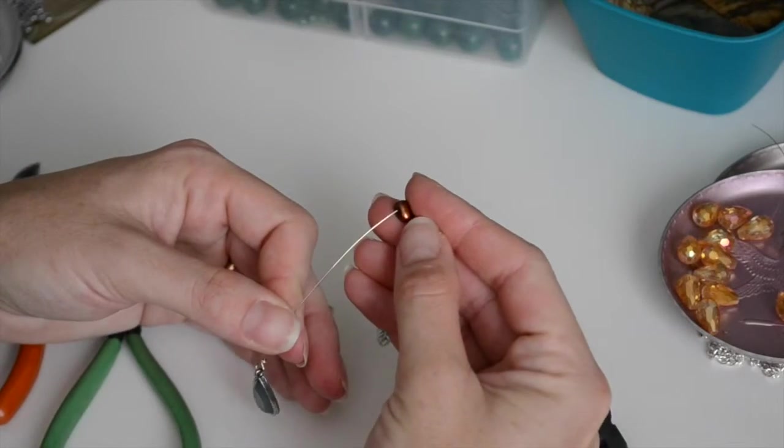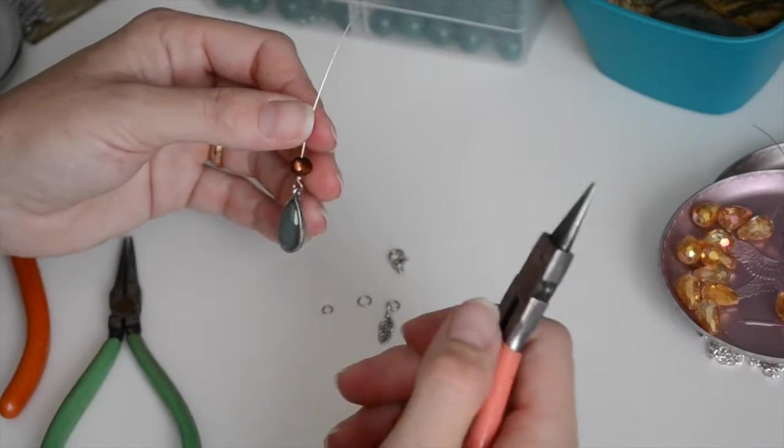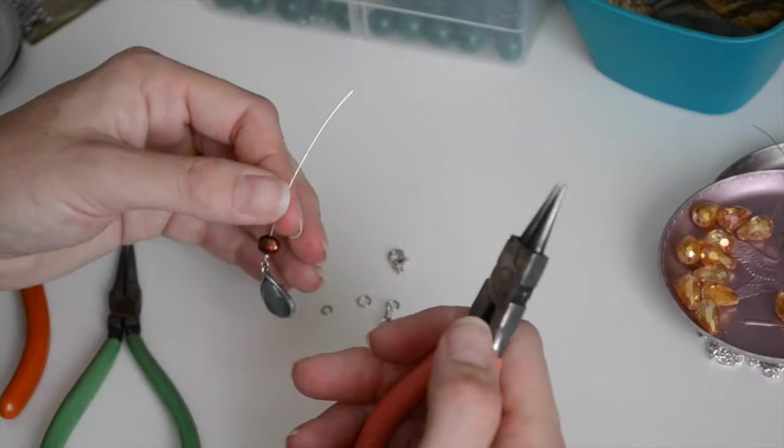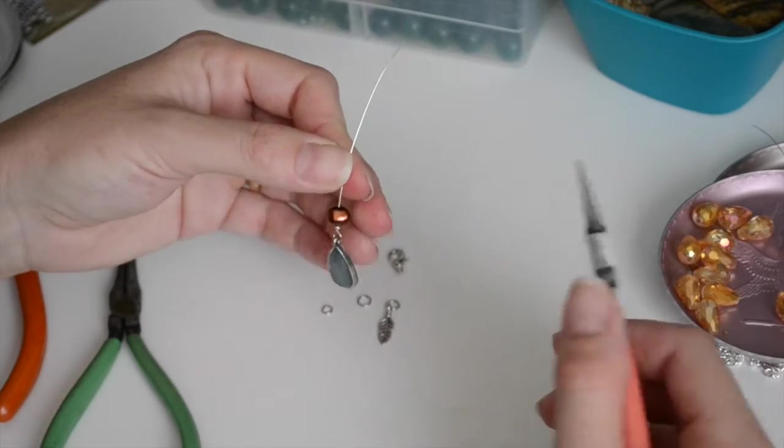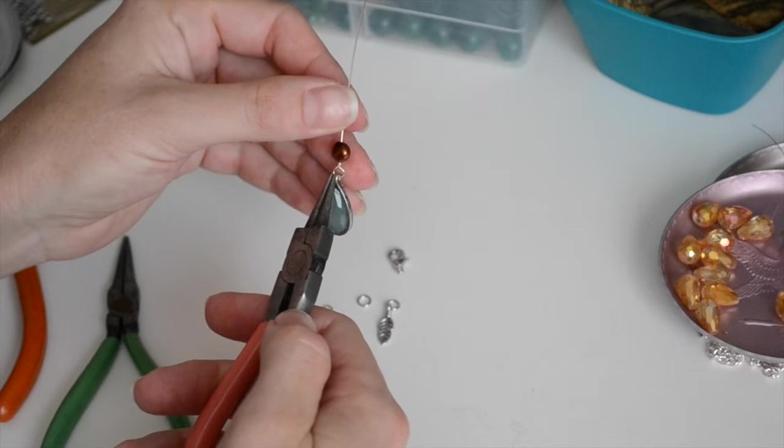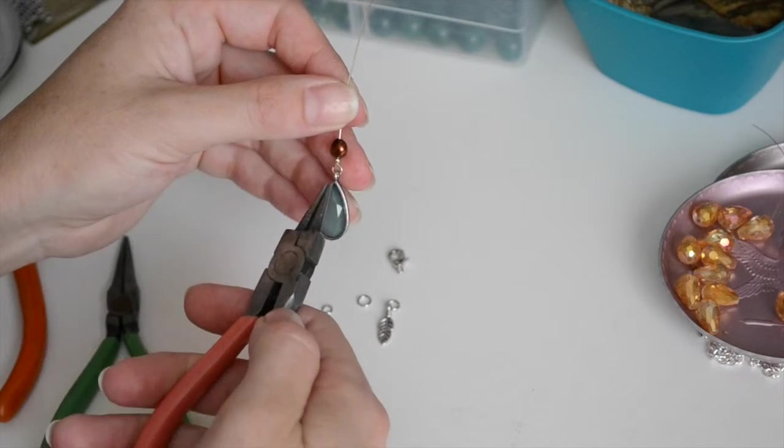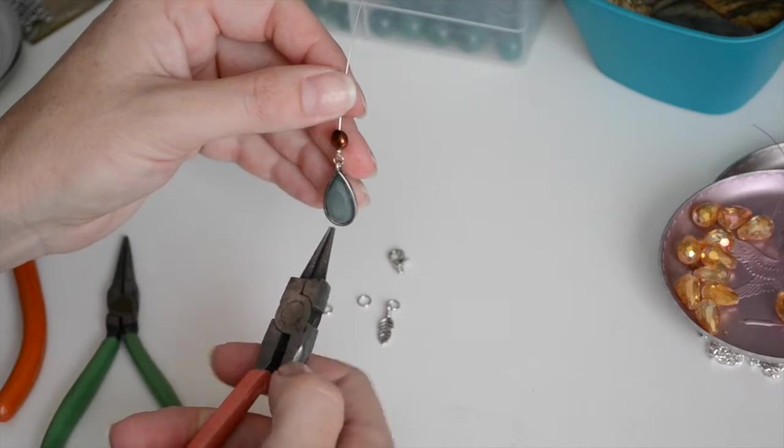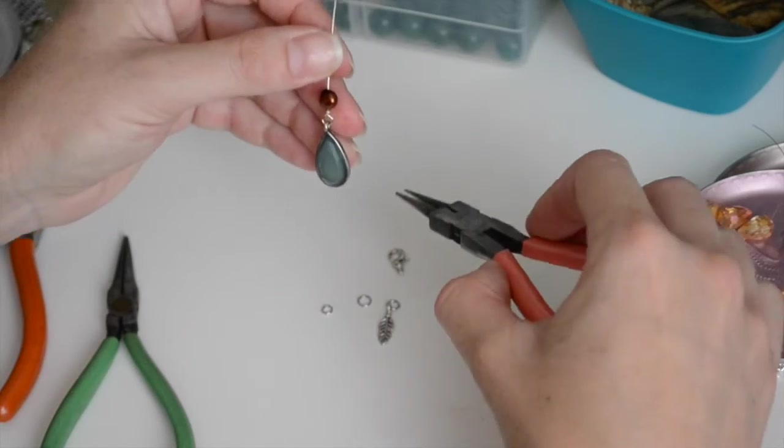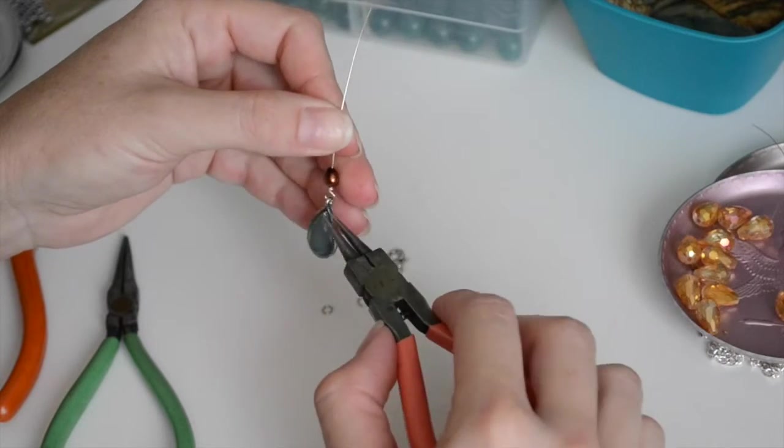Now we're going to put our little pearl on there. And we're going to make another wrapped loop above that. But going the opposite way. See this loop is going this way so it's housing the drop nicely. This loop is going to house the chain. So we want it to go opposite this guy.